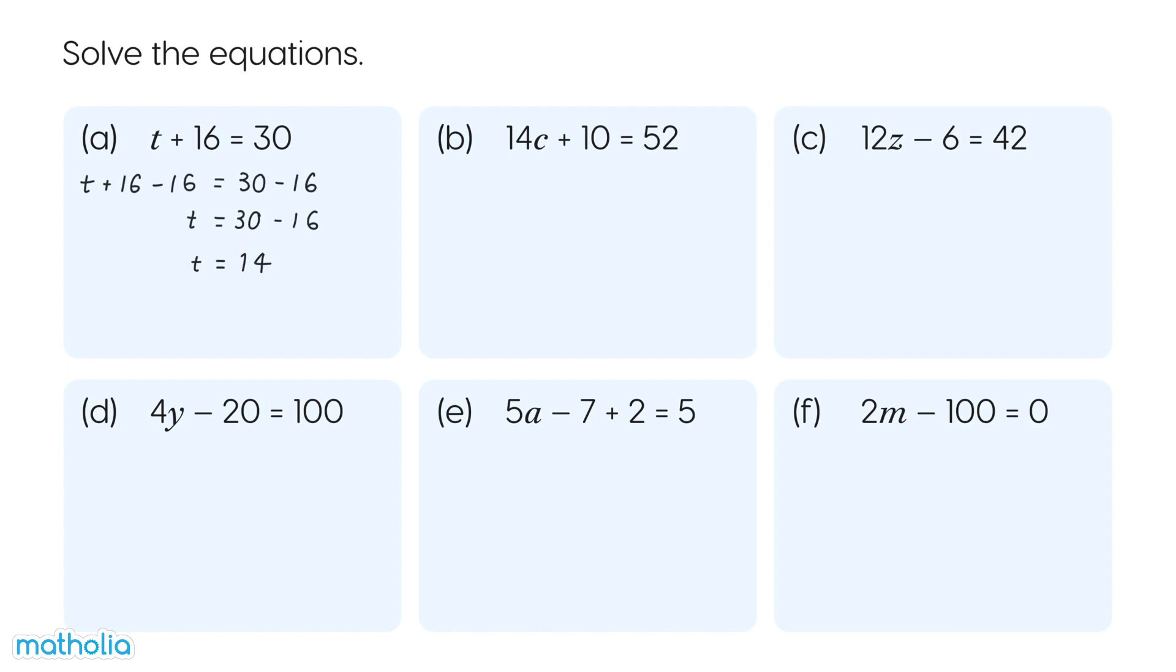B. 14C plus 10 equals 52. Subtract 10 from both sides. 14C equals 42. Divide both sides by 14. C equals 3. We have solved the equation.